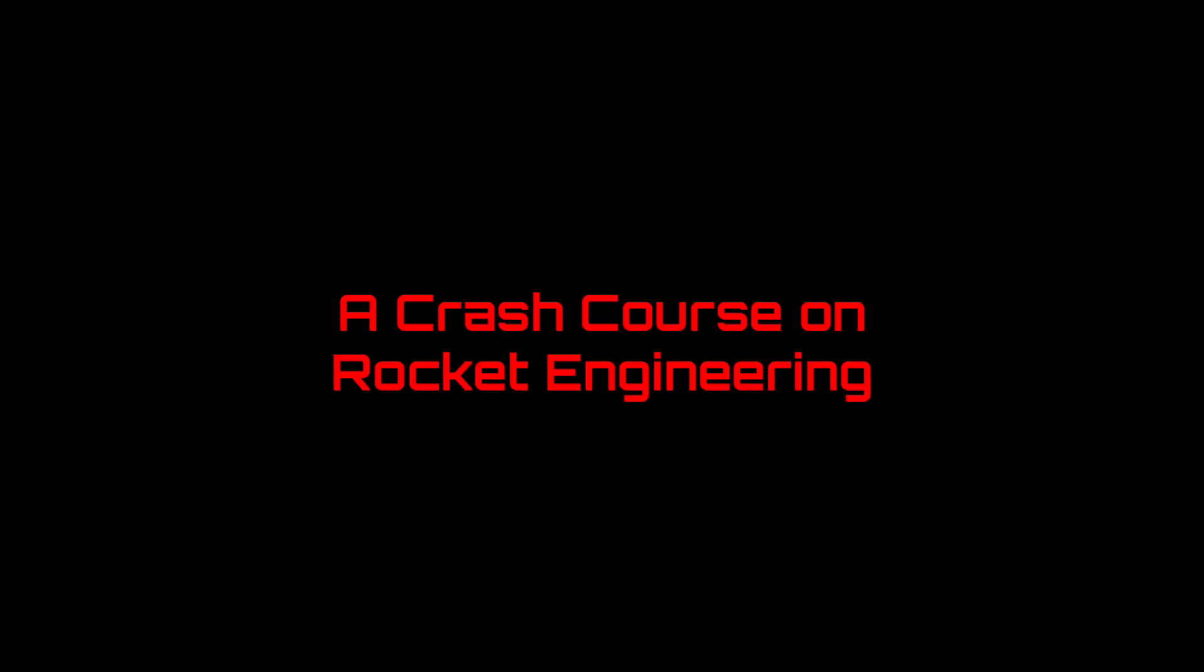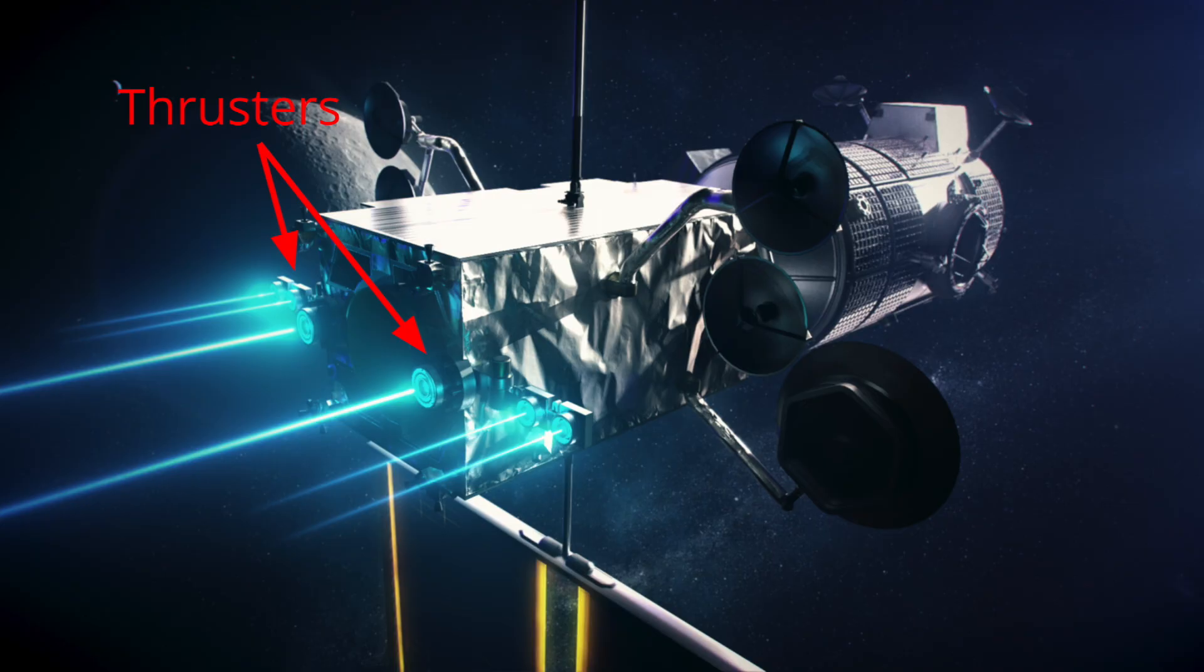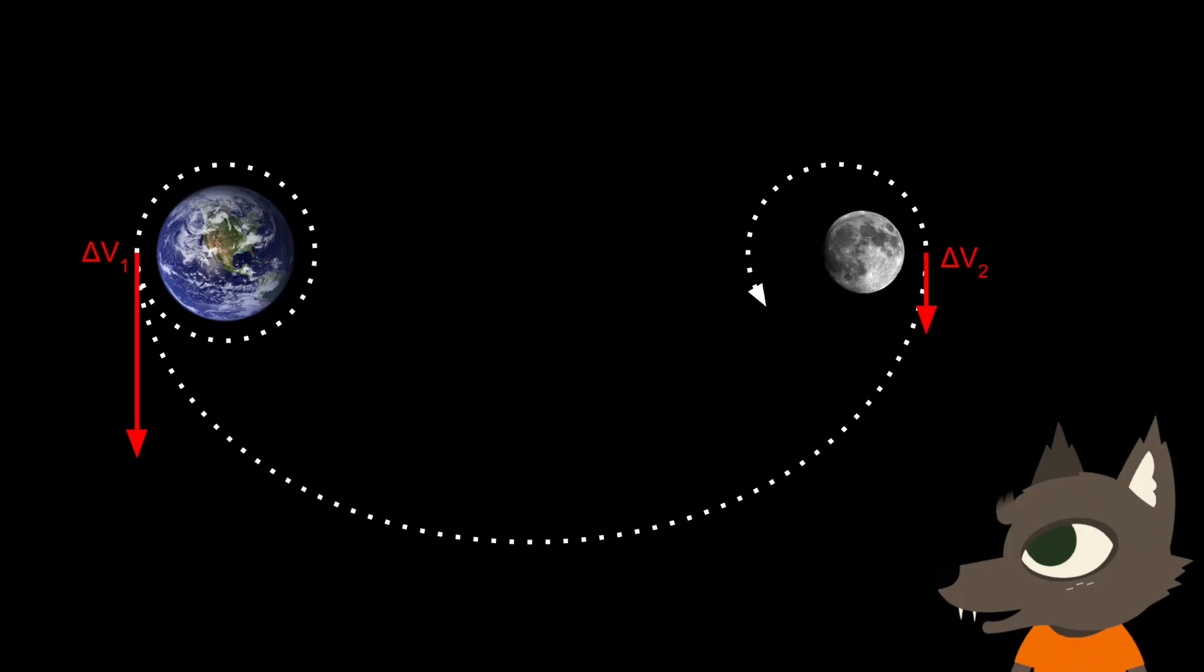Let's start with a crash course on rocket engineering. A thruster is just a device that pushes on a spacecraft to change its velocity. Whether you want to land on Mars, escape the solar system, or even just maintain a satellite in Earth orbit, each mission needs a certain amount of change in velocity, or delta V, to get the spacecraft to its destination.